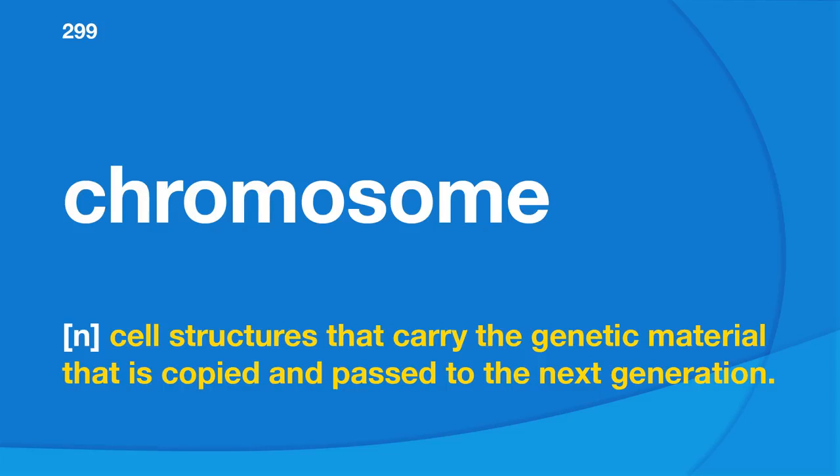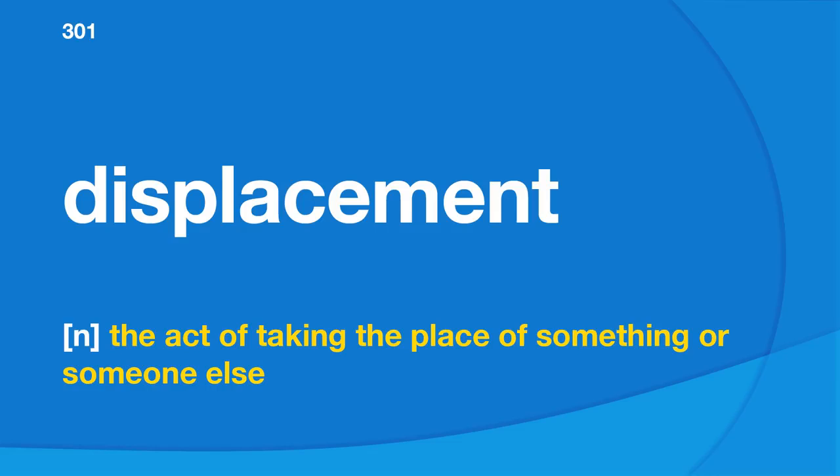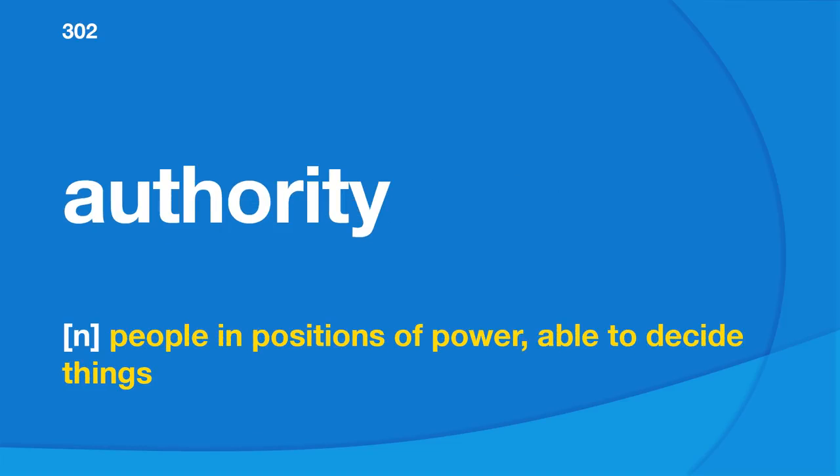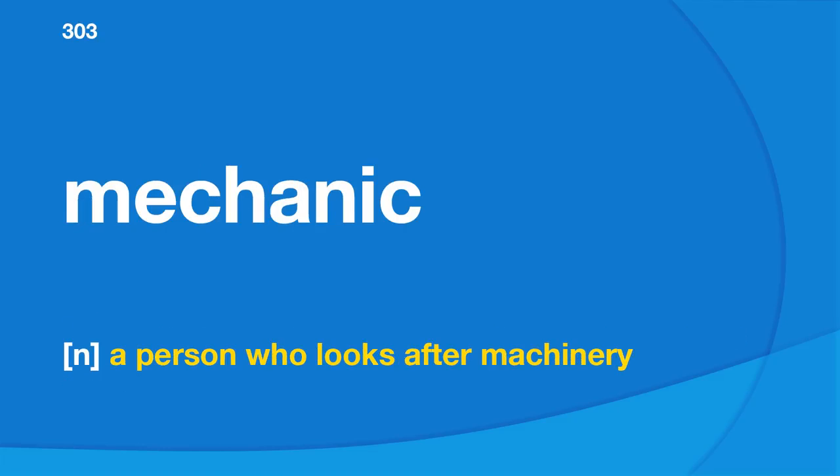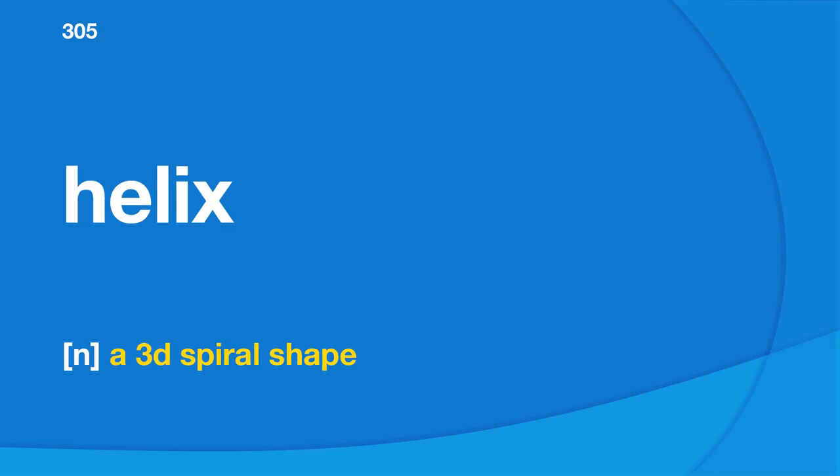Deliberately: in a careful, considered manner. Displacement: the act of taking the place of something or someone else. Authority: people in positions of power, able to decide things. Mechanic: a person who looks after machinery. Organism: a living thing, often one that is small. Helix: a 3D spiral shape. Substitution: a person or thing acting or serving in place of another; to put in the place of another. Informal: not official, not done by the rules.